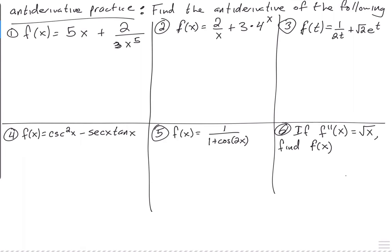All right, so why don't we do the first one? So what rule do we use here? The power rule — it's the power rule for anti-derivatives. So what would that be? That would be 5x squared. So you add 1 to the exponent, so squared, and then divide it by 2.